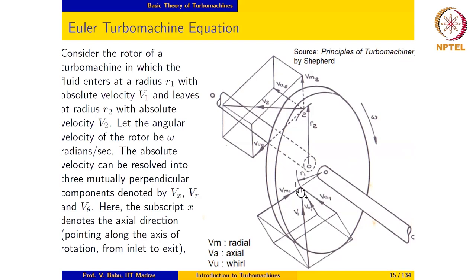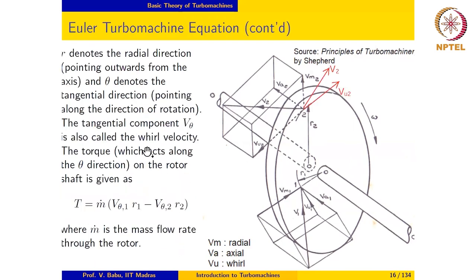At the entry location, the tangential component of velocity looks like this. At the exit, the tangential component is also usually referred to as the whirl velocity.